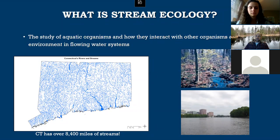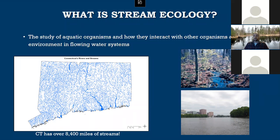Stream ecology is the study of aquatic organisms and how they interact with other organisms and their environment in flowing water systems. In Connecticut, we're blessed to live in a water-rich state and there are streams all around us. You may not realize it, but you're probably not very far from a stream. There's a lot of diversity in the streams in the state, ranging from small headwater streams only a few feet wide all the way up to the Connecticut River, which is several hundred feet across and might look more like a lake to some people.